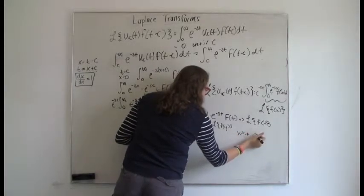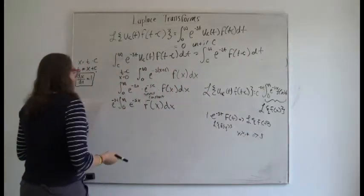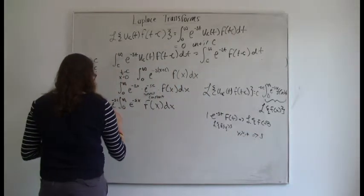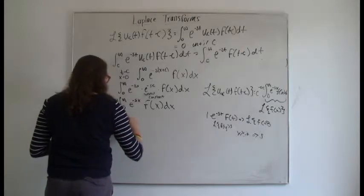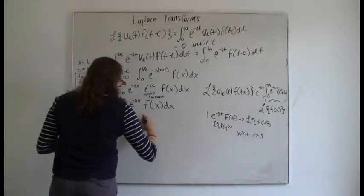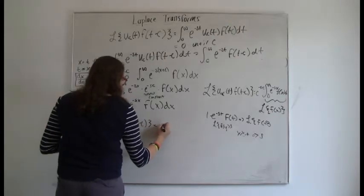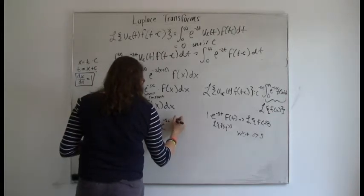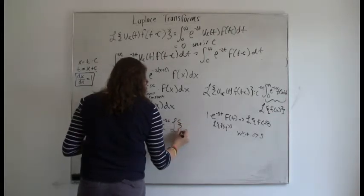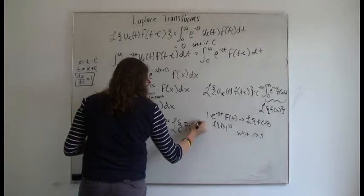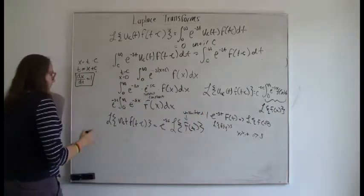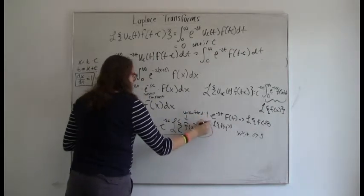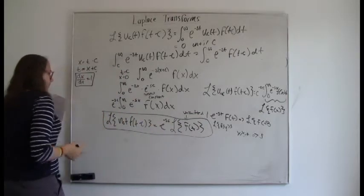So this is our conclusion: the Laplace transform of u_c(t) times f(t minus c) is equal to e to the negative sc times the Laplace transform of f(t), which is just the unshifted function. That makes it really simple — as long as you know the unshifted function, you can find the Laplace transform of the shifted function.